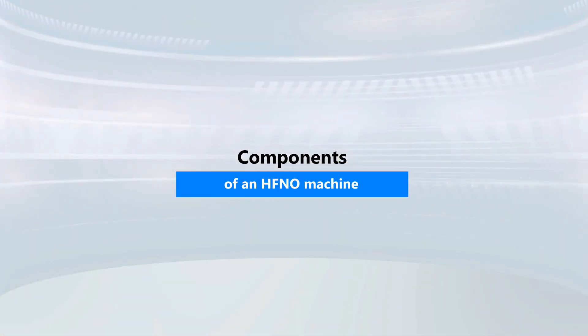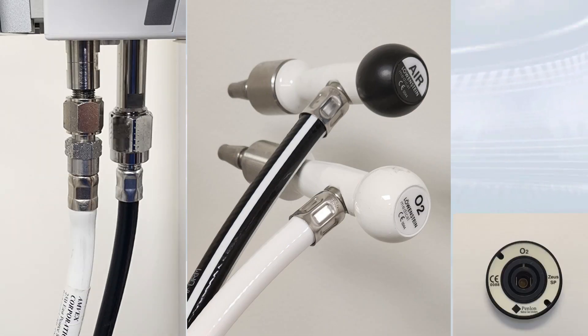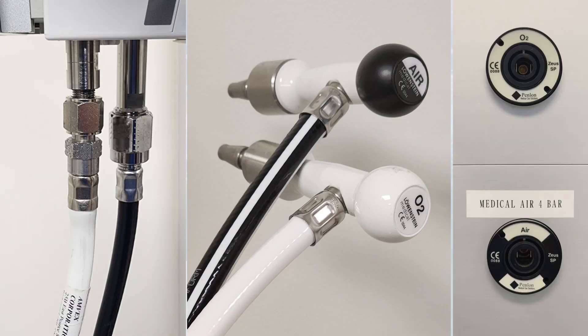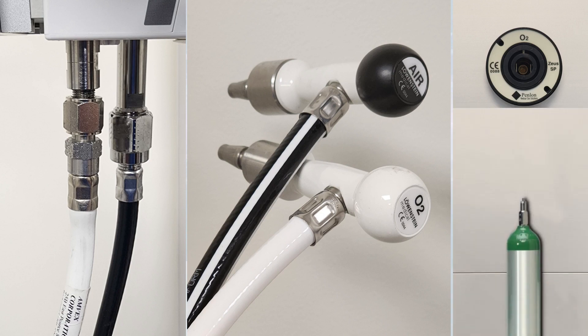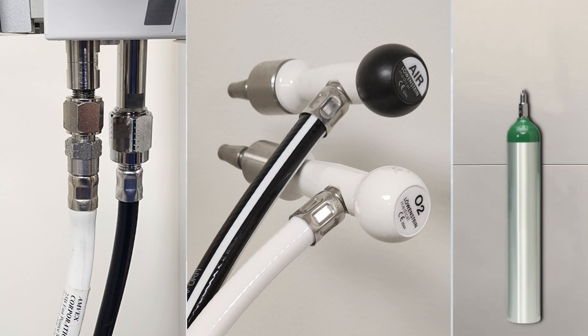First, let's see the components of this machine. Air and oxygen tubes will be connected to the pipeline sources with a pressure of four bars. Additionally, when moving patients to the ICU or recovery room, you can connect them to cylinders using this connector.